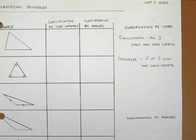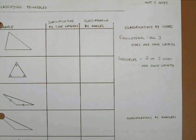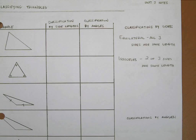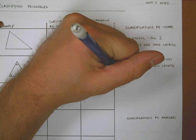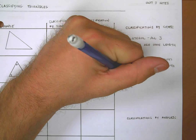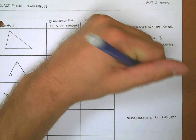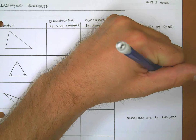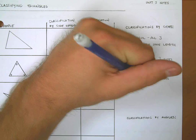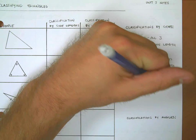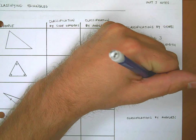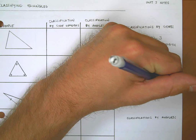It wouldn't make any sense to say that one side is the same length as itself, so we skip over that and go down to zero of the three sides being the same length — and that is called a scalene triangle.